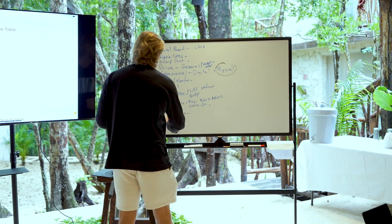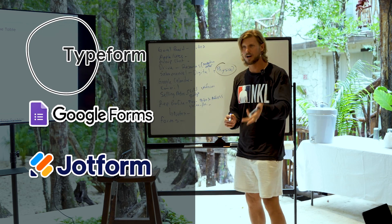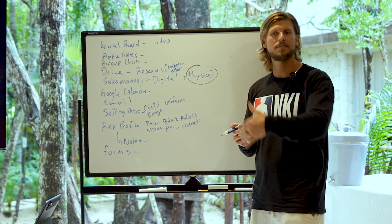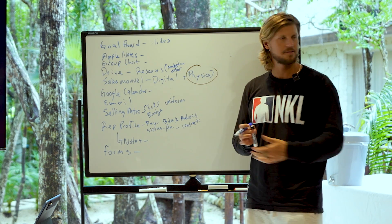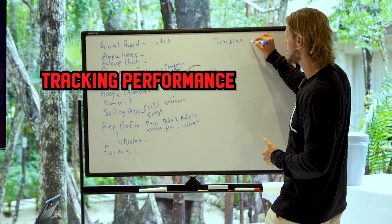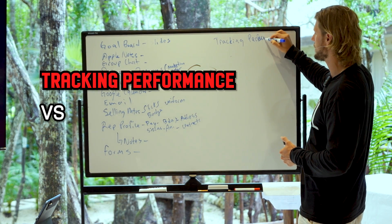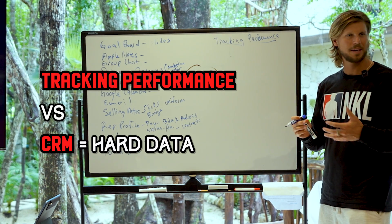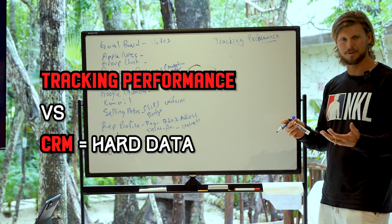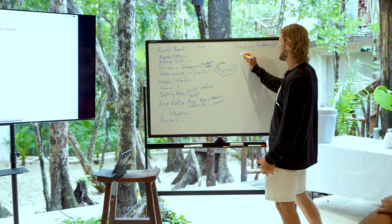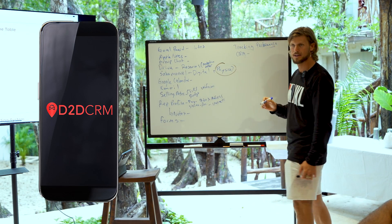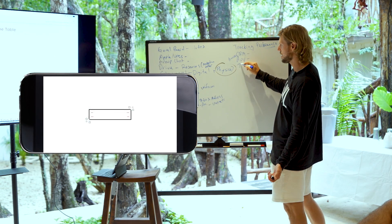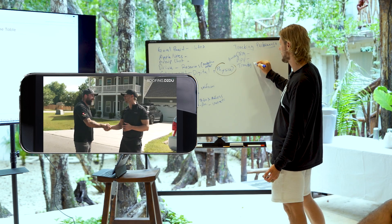So maybe forms — Google Form, Typeform, dot form. He talked about milestone club, tracking their incentives and stuff like that. We'll call this tracking performance. Why is that different than a CRM? CRM is going to give you hard data. But if I make a game or a milestone thing, is my CRM telling me about the milestone club? Most of the time, no. So there's a CRM login I've got to give them, a knocking app login, and a D2DU training login.